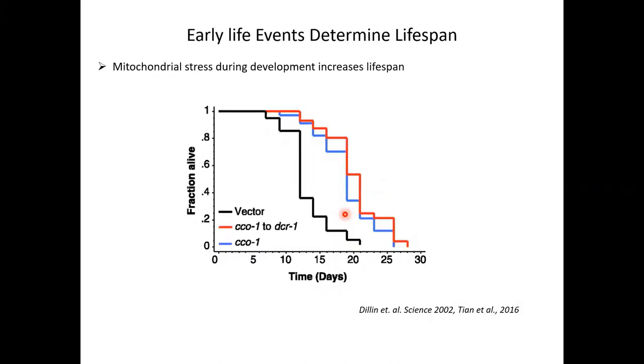But the question is, can we go even earlier in time? Because there is proof of developmental events that can shape physiological processes later in life. Ario Dillin, back in 2002, showed that by down-regulating one of the components of the respiratory chain, this would increase mitochondrial stress and also increase lifespan as shown here in the blue curve compared to the control one. What was interesting in this case was that you could have the exact same effect if you knock down this component only during development, shown here in the red curve.